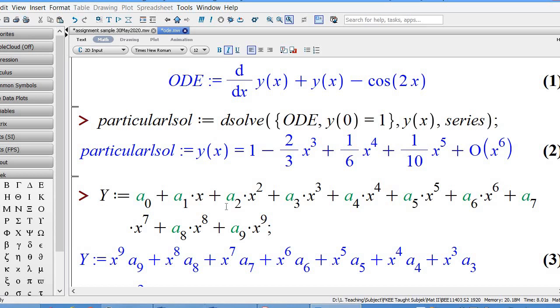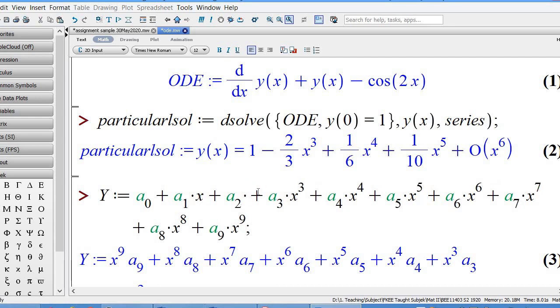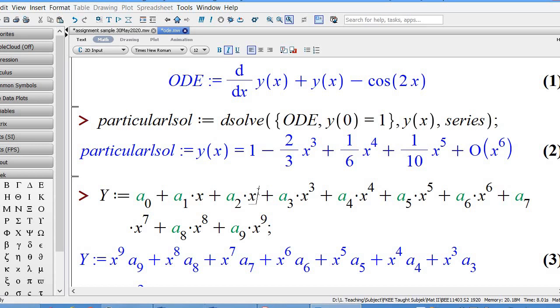I put it as capital Y. Make sure colon equal. Substitute the power series expansion of y(x), which is a_0 plus a_1*x plus a_2*x squared plus a_3*x cubed. For multiplication in Maple, make sure you press shift asterisk for the multiplication symbol. This is the power series expansion for y.